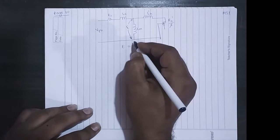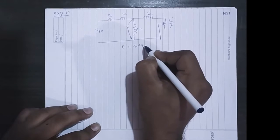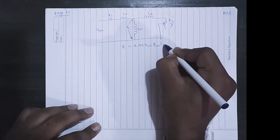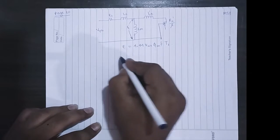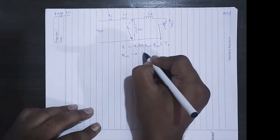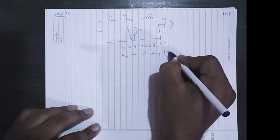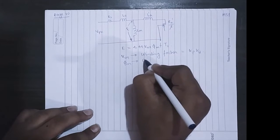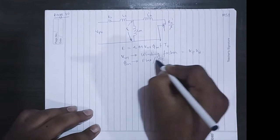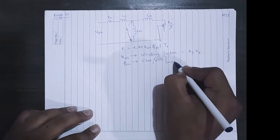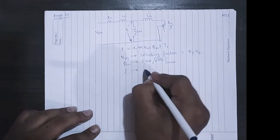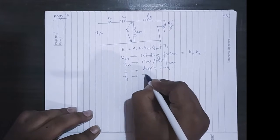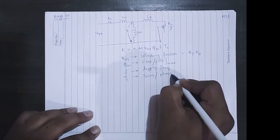We can write this E as 4.44 times k_w1, that is winding factor, times phi_m, frequency f, and T_1, where k_w1 is winding factor, multiplication of k_p and k_d. Phi_m is flux per pole, the maximum value. F is the supply frequency and T_1 is turns per phase.